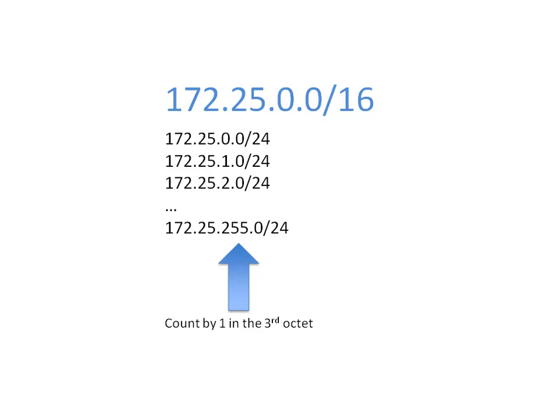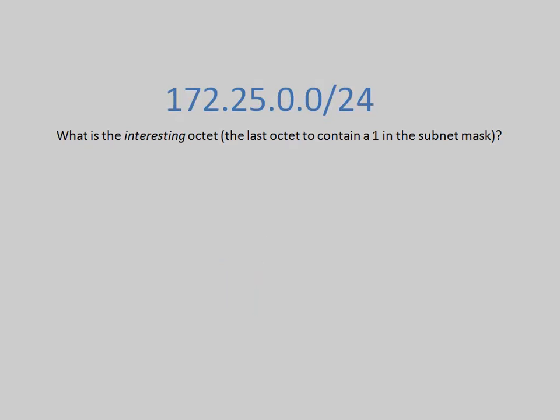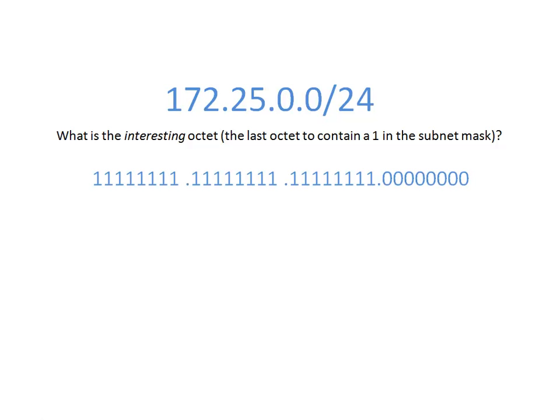Let's get into it. The first thing we need to do is determine the interesting octet. Here's the definition: the interesting octet is the last octet to have a 1 in the subnet mask. In our example, we had a subnet mask of 24, which translates into 255.255.255.0. Written in binary, that's eight 1s, a dot, eight 1s, a dot, eight 1s, a dot, and then eight 0s. The last octet to contain a 1 is the third octet, and we call that the interesting octet.